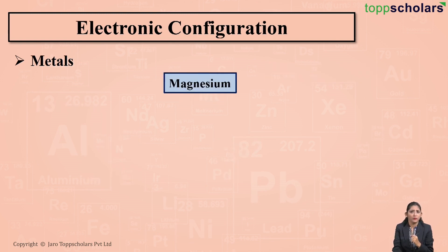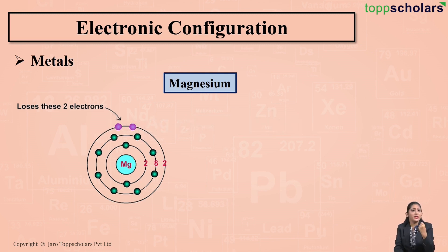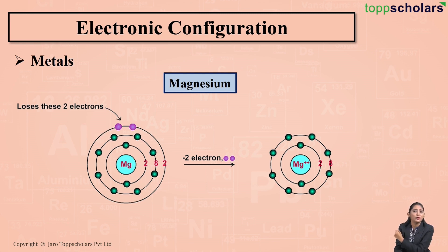What about magnesium? The atomic number of magnesium is 12, so its electronic configuration is 2, 8, 2, which means that magnesium has 2 electrons in its outermost shell. Magnesium loses these two valence electrons and forms a Mg2+ cation. There are then 8 electrons in the outermost shell, meaning magnesium becomes stable by losing two electrons.